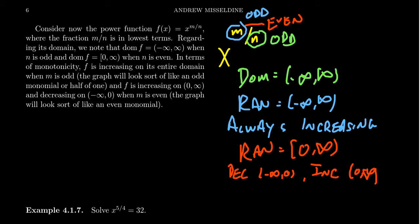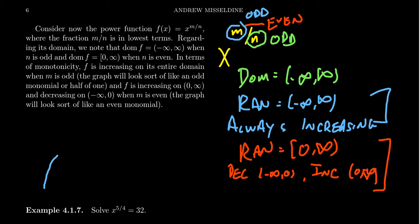In that regard, with an odd denominator, an even numerator looks like an even monomial and an odd numerator looks like an odd monomial. That's not exactly true because the concavity can be very different — an odd monomial will look something like a standard cubic shape, but the concavity of these power functions could be quite different. We won't worry about that right now.